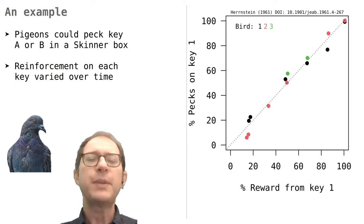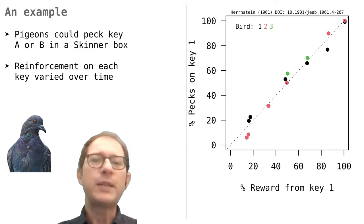These are the results from three pigeons used in Hernstein's experiment. The graph shows how much the pigeons were pecking on key 1 as a function of the reward that they were getting from key 1. As you can see, the pigeons matched closely behavior with reinforcement.